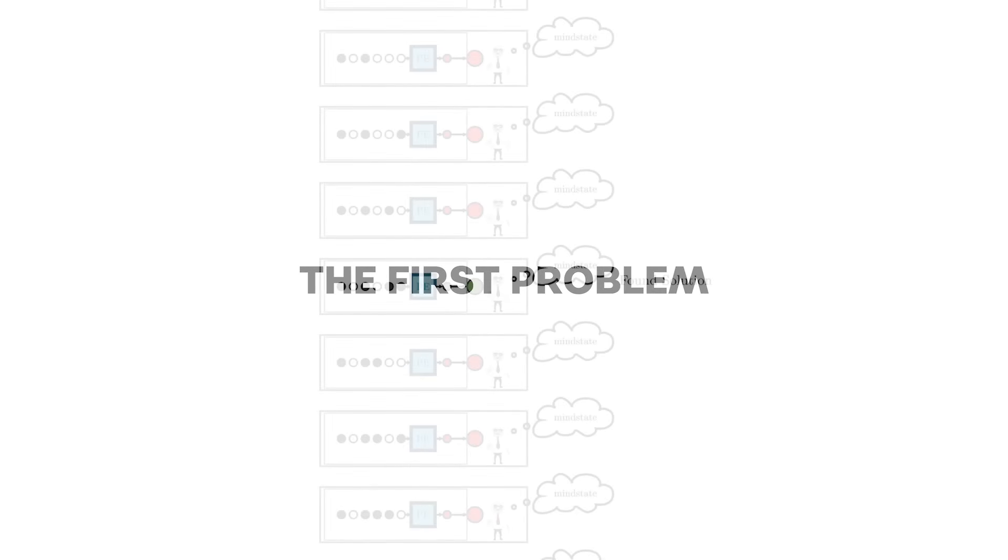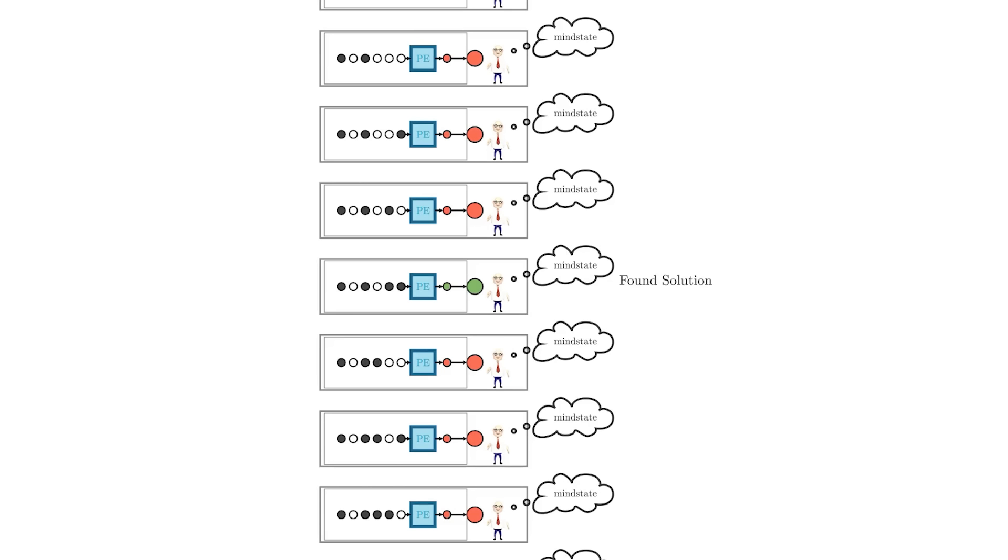The first problem arises when we want to look at the result. As soon as the observer copies look, the mind states of all the 2 to the n observers diverge, and one of them sees the correct result, and all the other 2 to the n minus 1 see a failure. This is no good. This looks to each observer as if we just tried one of the combinations at random with a 1 out of 2 to the n chance of success.